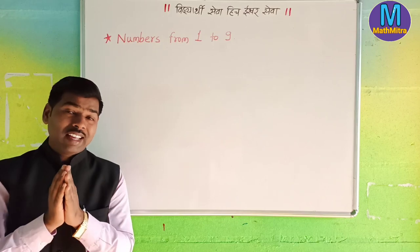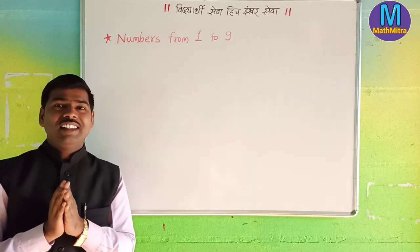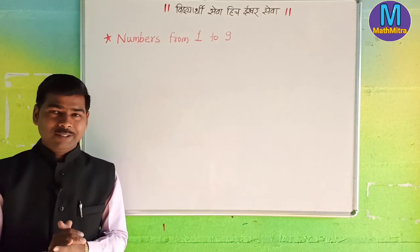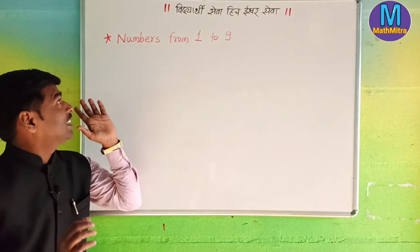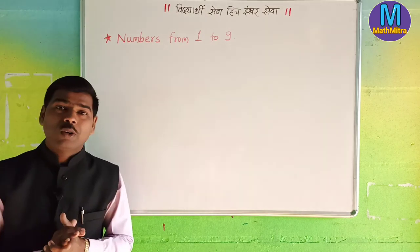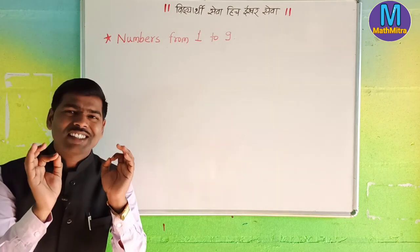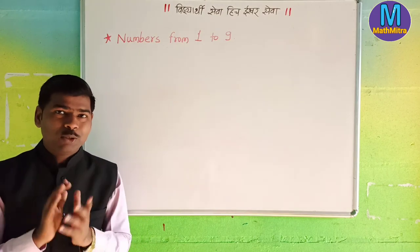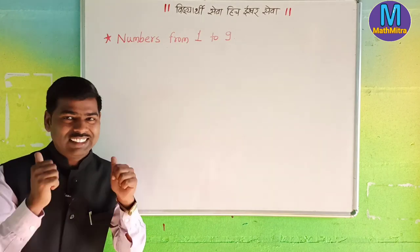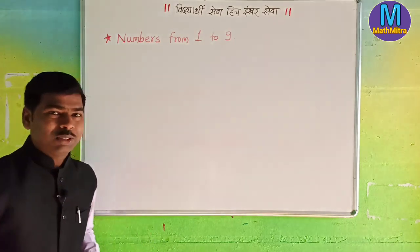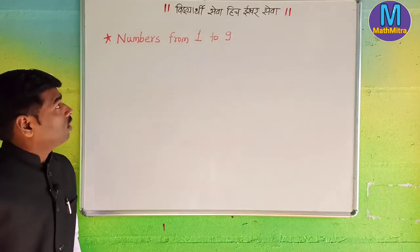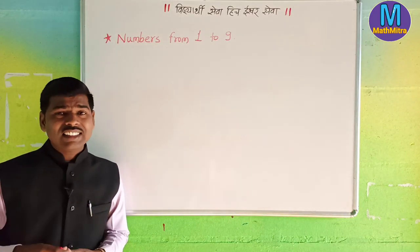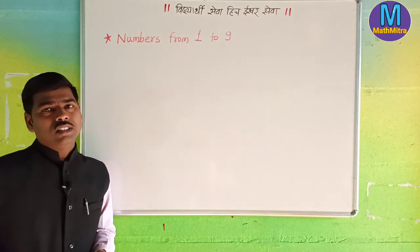My friend, I am going to start with some of my seniors. I will start with numbers from 1 to 9. This is a very simple chapter. My friend, I will start with the first — numbers from 1 to 9.